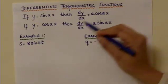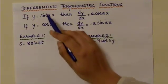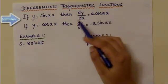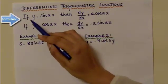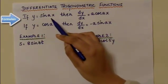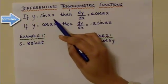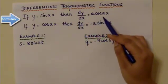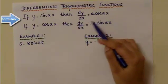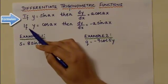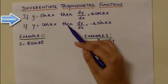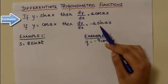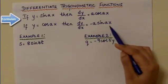This video is about the differentiation of trigonometric functions. The two formulas to be used are: if y equals sin ax, then dy over dx equals a cos ax; and if y equals cos ax, then dy over dx equals minus a sin ax.